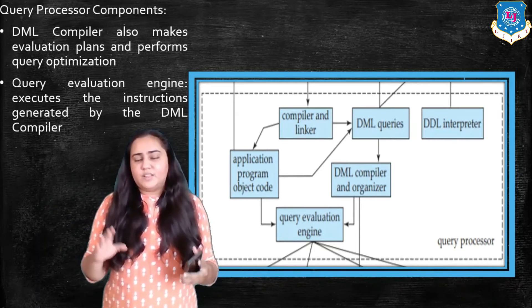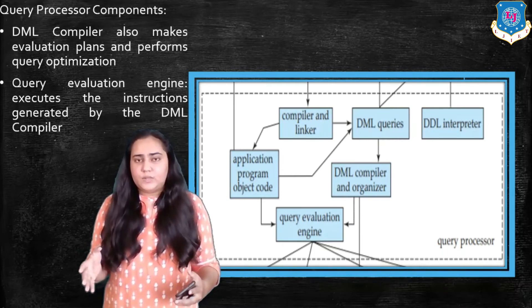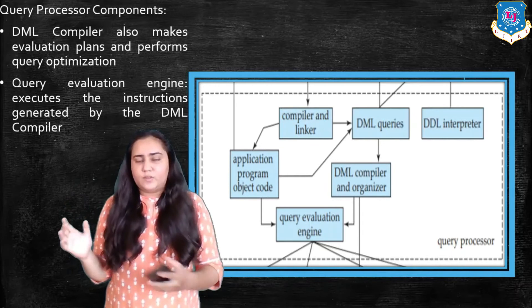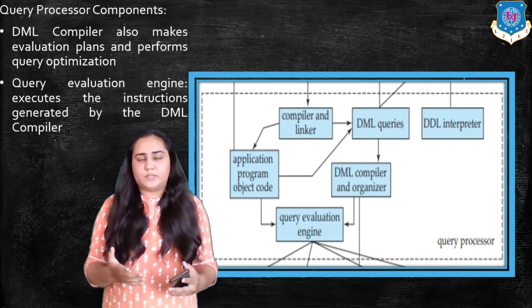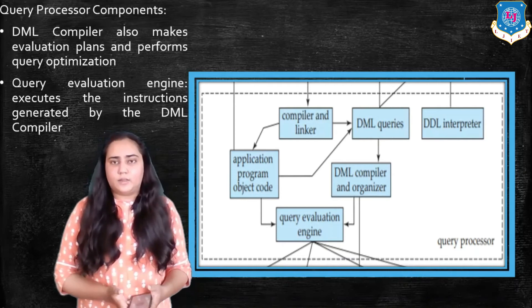But you are only writing one line, but that one line is actually a huge file containing a lot of code. So when it is compiled at that time, the linker actually replaces those lines with the entire code that is present. So that is why it is known as compiler and linker together.